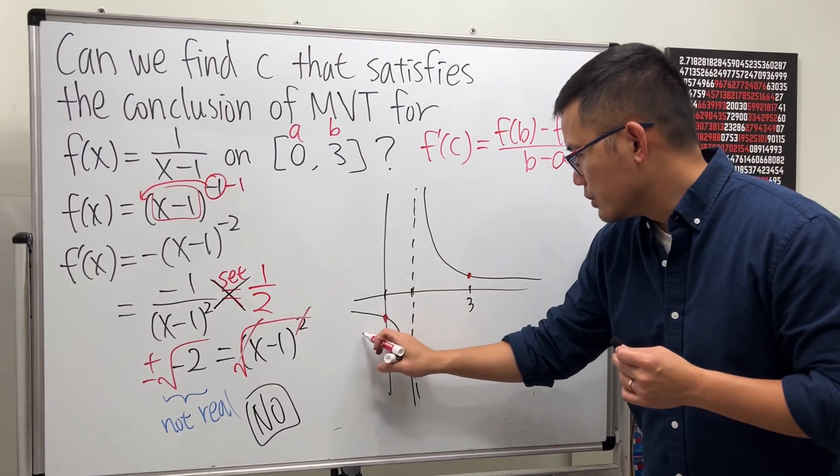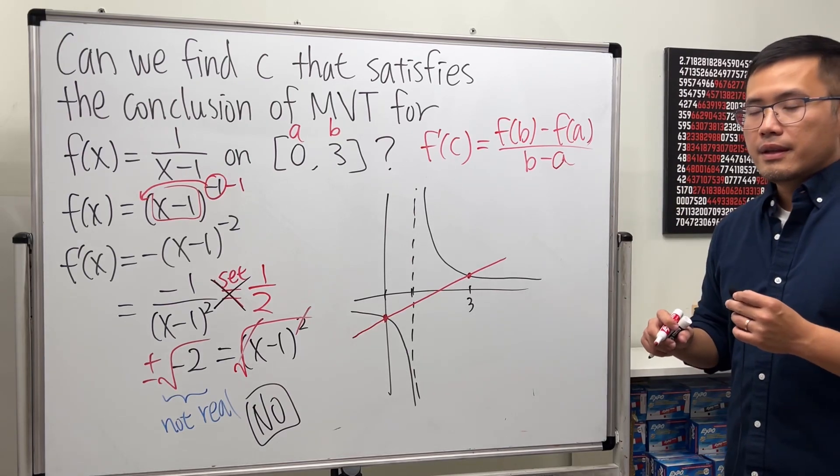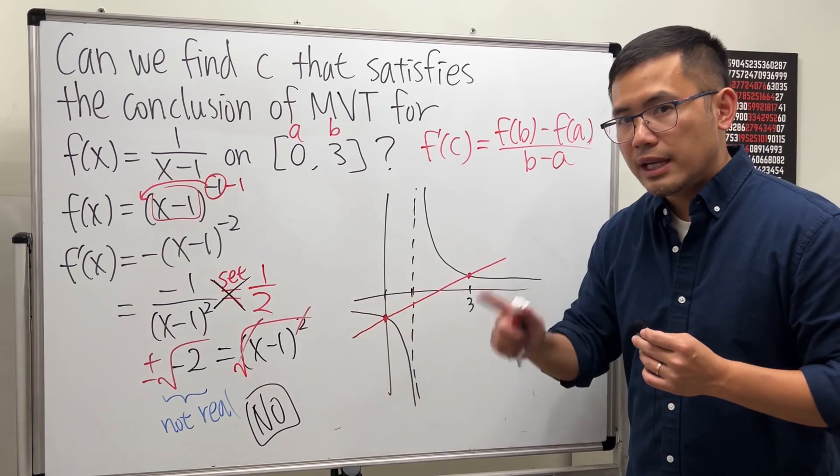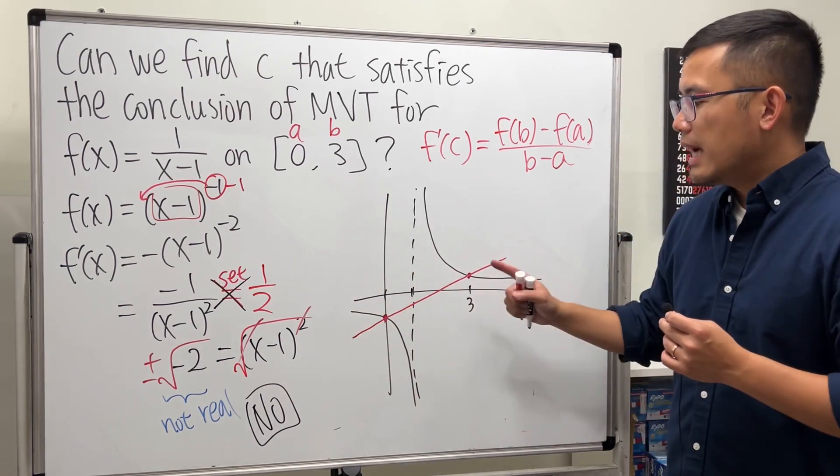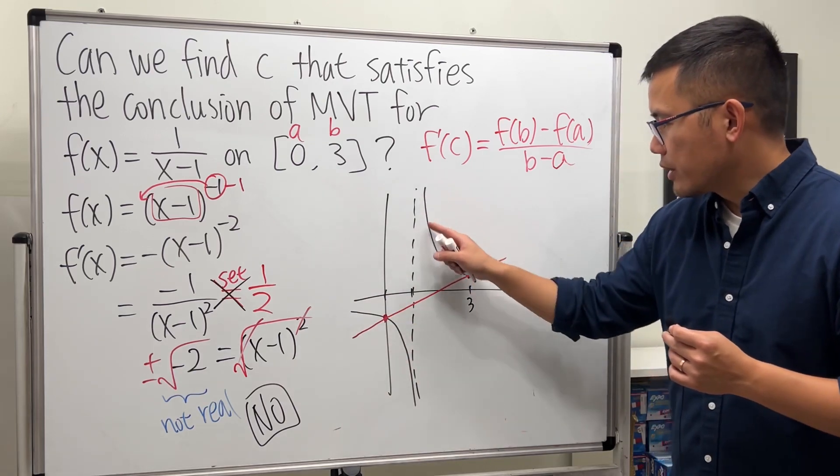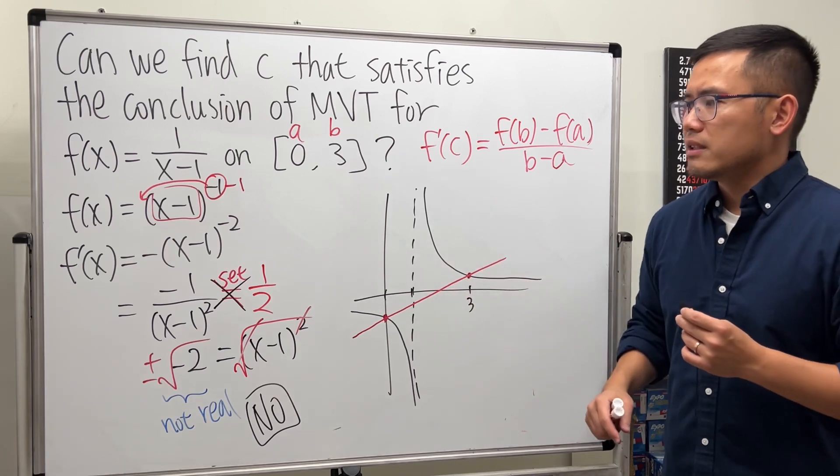So when we go from 0 to 3, here is the secant line. As you can see, there's no way for us to find a tangent line on the curve that has the same slope as that. In fact, all the slopes on the curve right here is negative. And how come for this one, we cannot find the c?